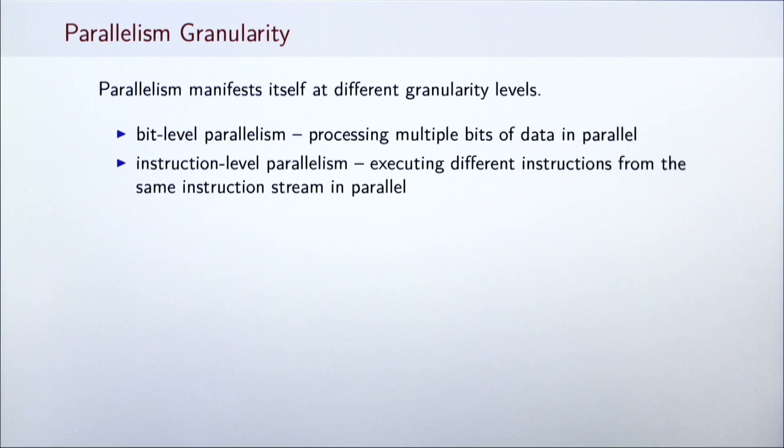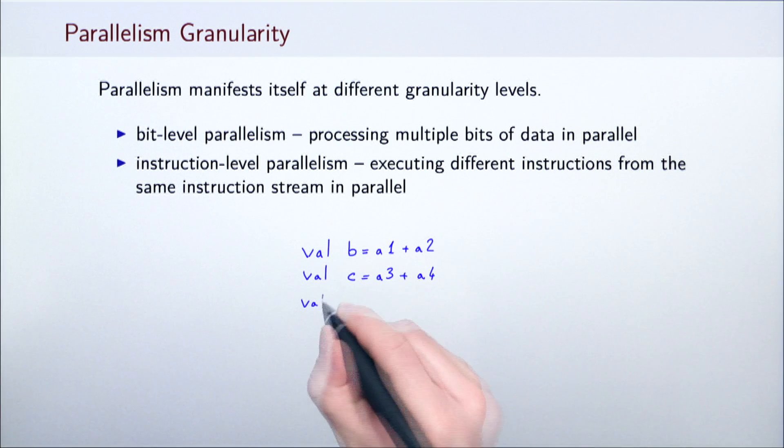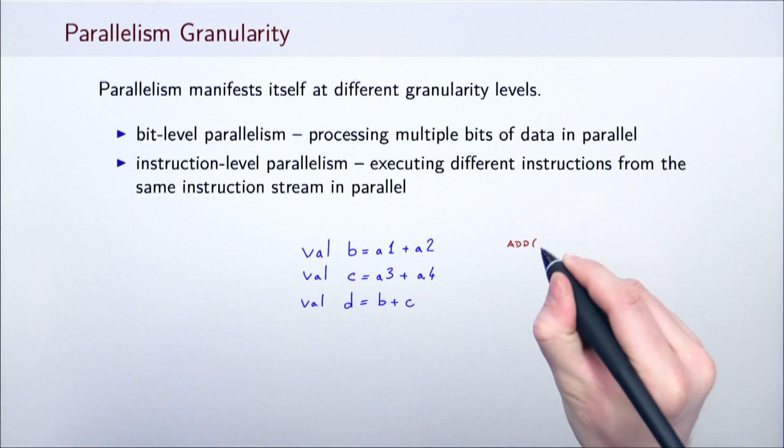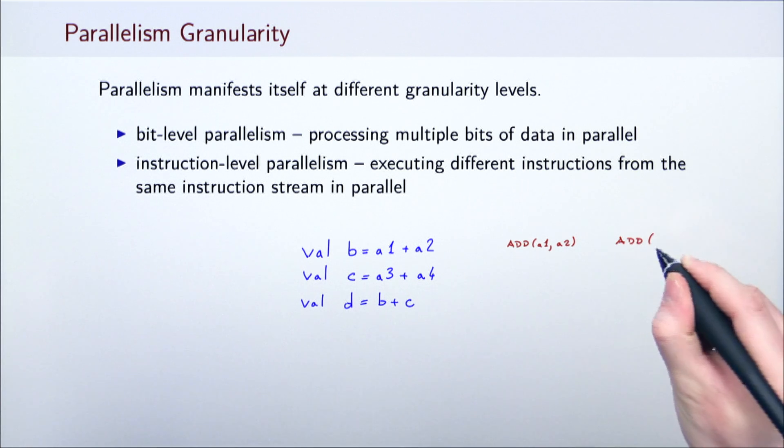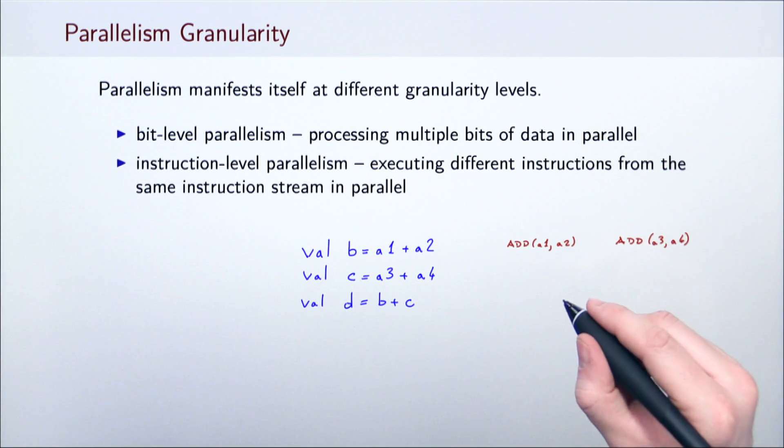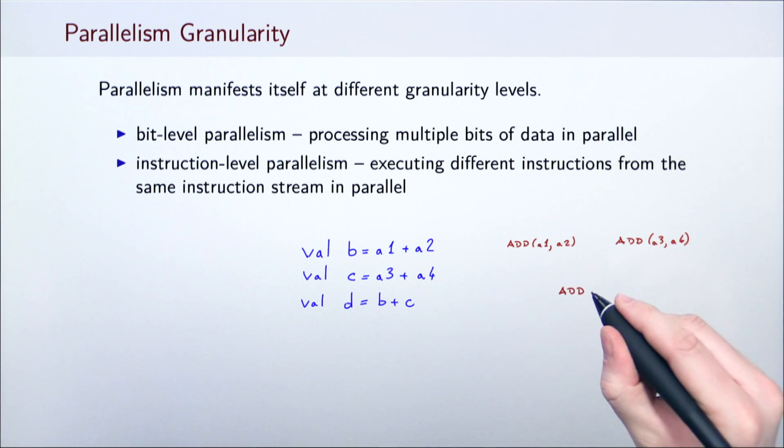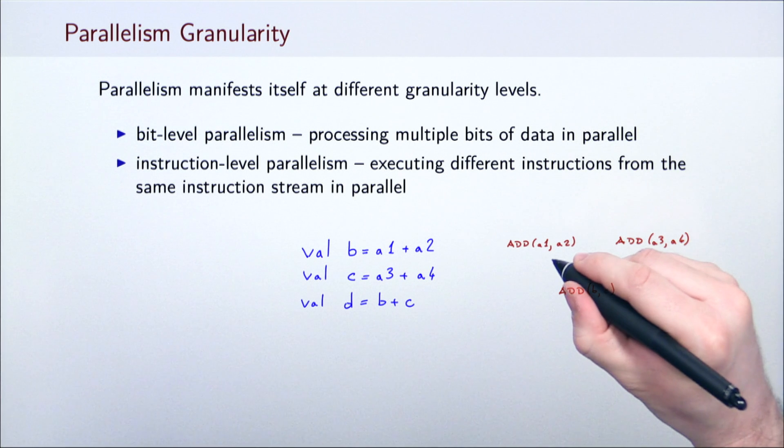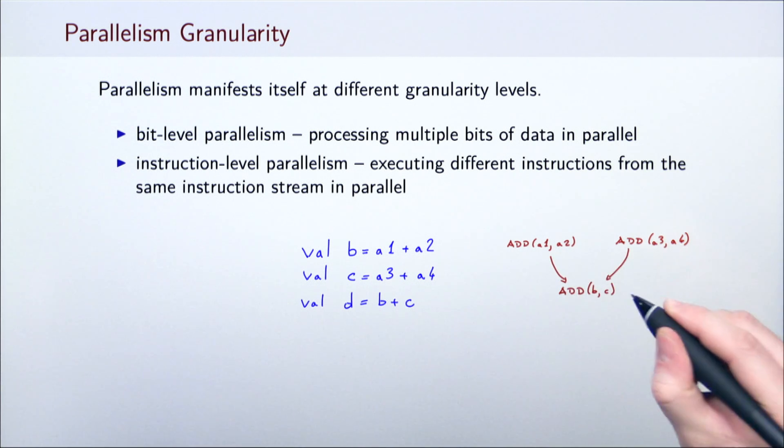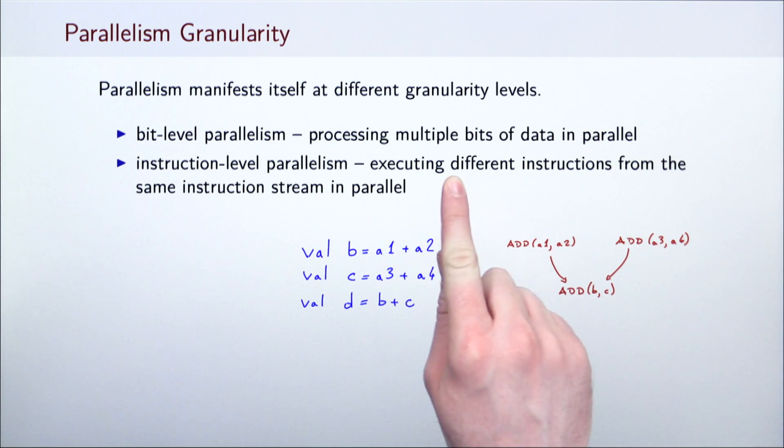On a more coarse-grained scale, parallelism can be achieved by executing multiple instructions at the same time. Consider the following example. Here, the processor has no reason not to compute B and C in parallel. This is because neither B or C depends on the other to be computed. This form of parallelization is thus called instruction-level parallelism. Note that a computation of D, however, can only be started after both B and C have been computed. So, in summary, instruction-level parallelism executes different instructions from the same instruction stream in parallel whenever this is possible.